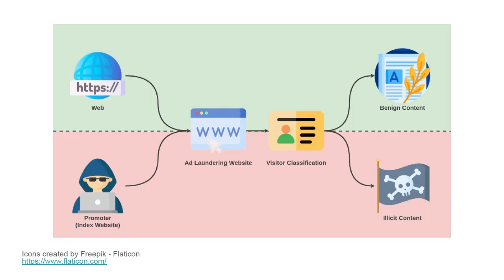Using ad laundering, bad actors are able to conceal copyright infringing content from most people and only show it to specific users. When ordinary users or even security experts visit the website directly, they will be served with legitimate and benign content. However, when a user is redirected to the same URL by a partner website, they get access to concealed illicit content. Advertisers are tricked into paying for ad slots next to illicit content, even though they think they are advertised next to benign content.